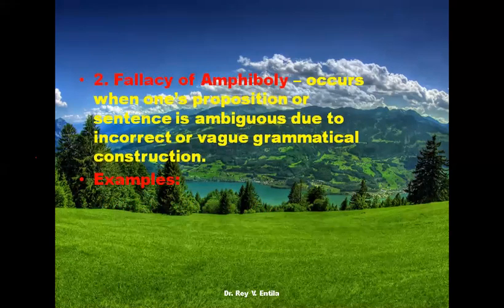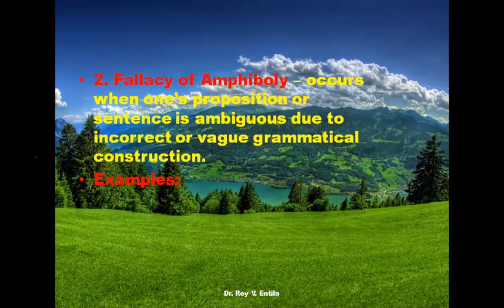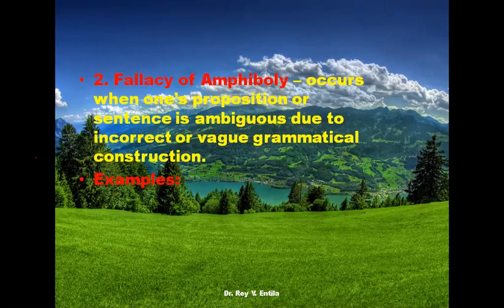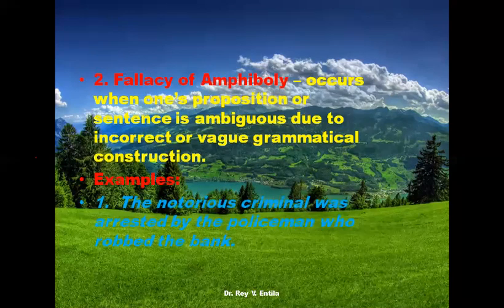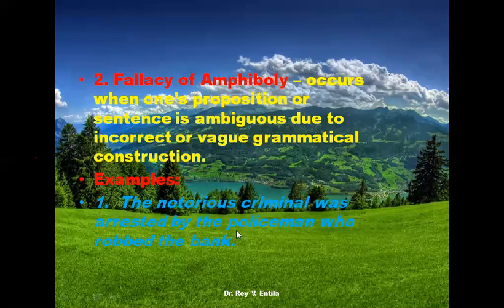The fallacy of amphiboly occurs when a proposition or sentence is ambiguous due to incorrect or vague grammatical construction. For example: 'The notorious criminal was arrested by the policeman who robbed the bank.' The question is: who actually robbed the bank — the policeman or the notorious criminal? It is confusing, because the relative pronoun 'who' is placed near the noun 'policeman,' so grammatically it appears to modify the policeman, suggesting the policeman robbed the bank.